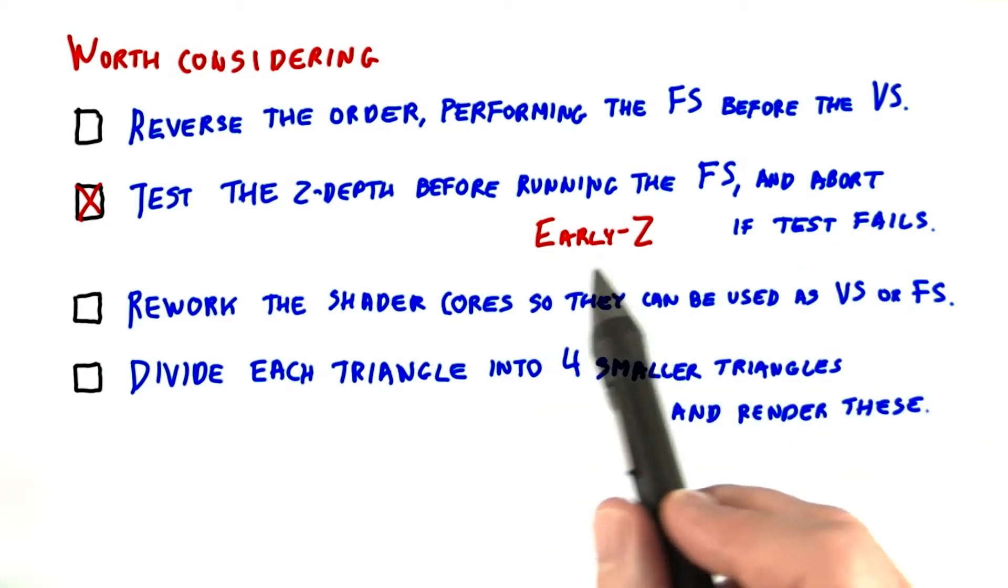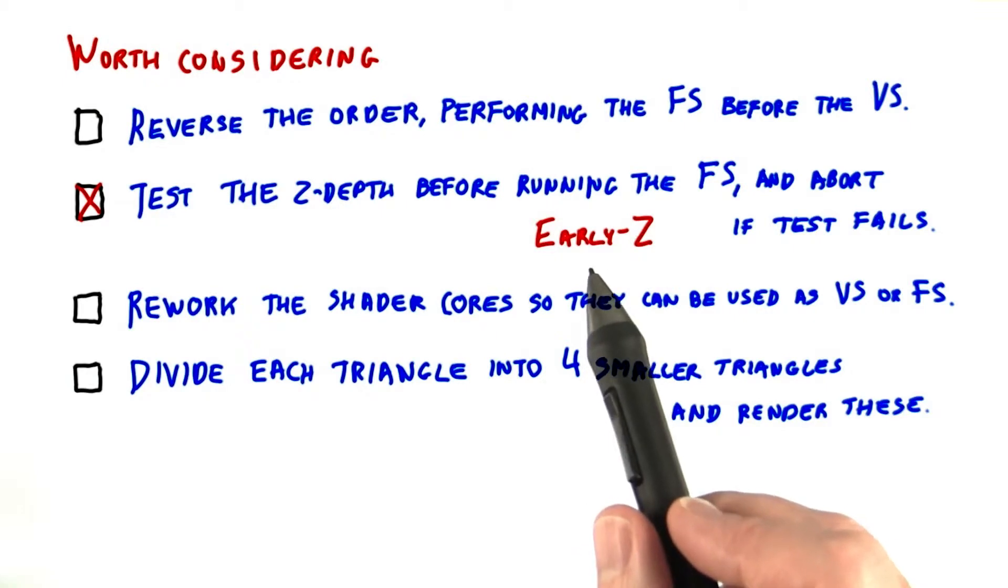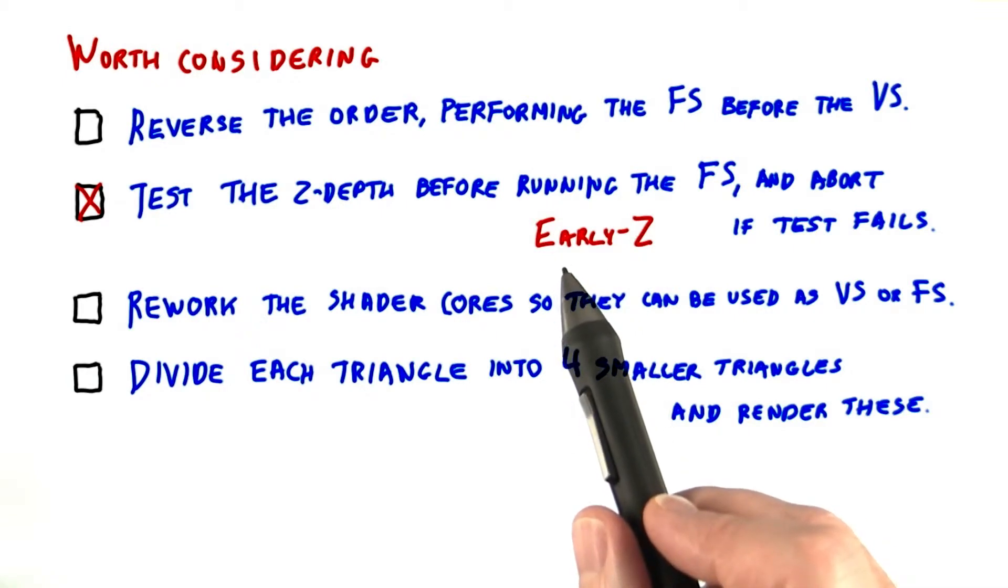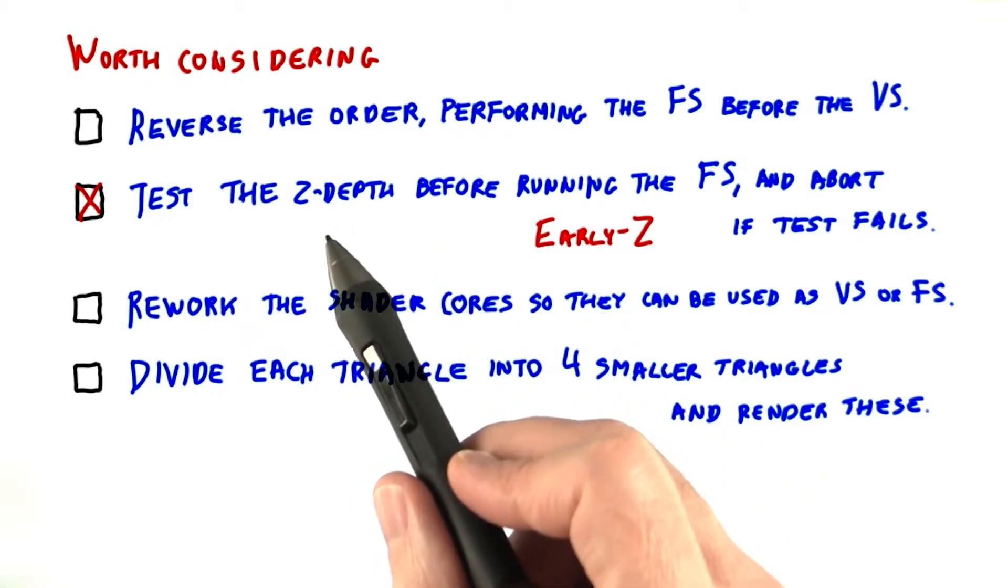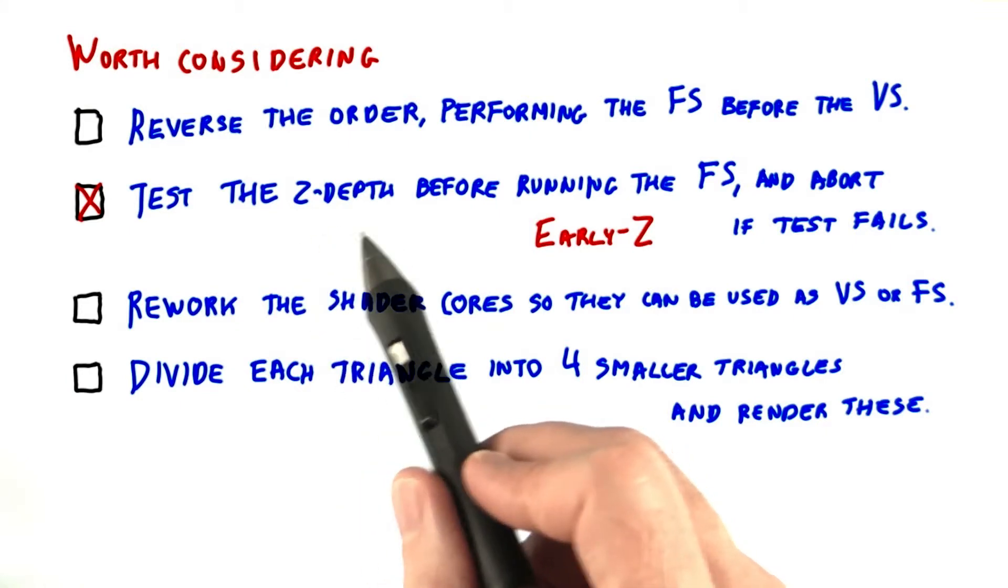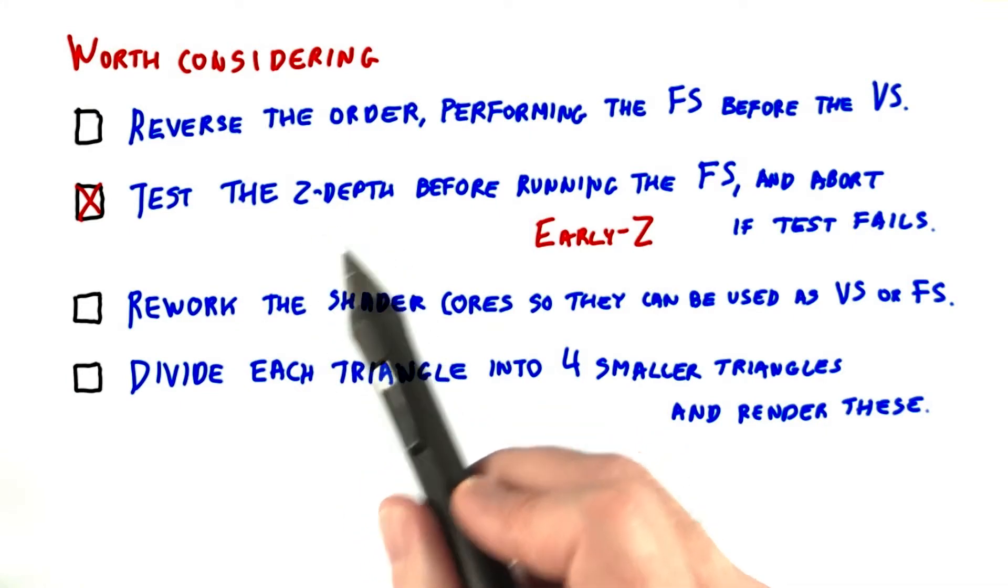However, there's a little subtle catch with this idea. If the fragment shader itself actually changes the z depth value passed in, then you cannot safely check the z depth before running the shader program. That said, about 99.44100ths of all fragment shaders never touch the z depth. In fact, in WebGL, it's not currently possible, though this has been proposed as an extension.